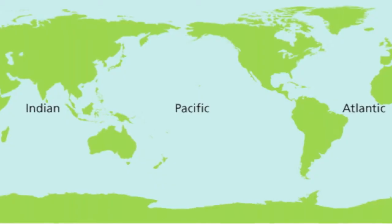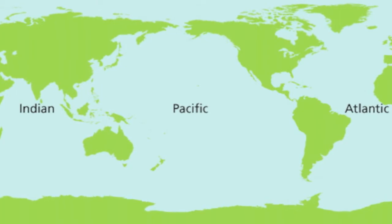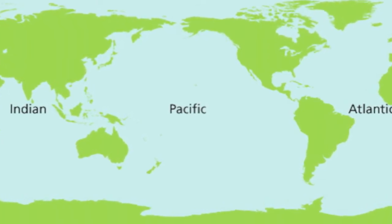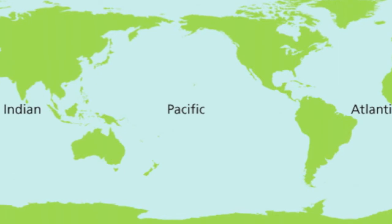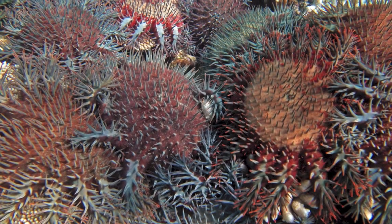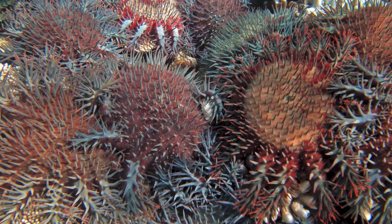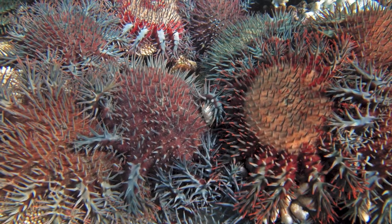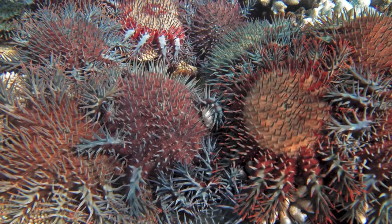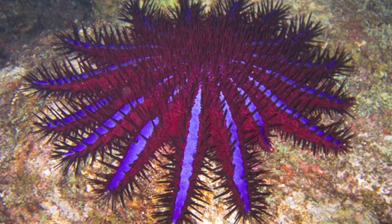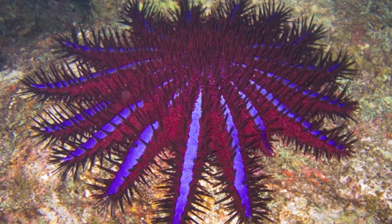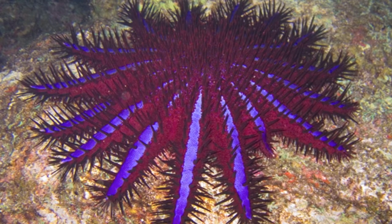The crown of thorns starfish is usually found in the Indo-Pacific region, the Indian Ocean, and the Western and Central Pacific Ocean. Crown of thorns starfish are such pests because they feed on coral and grow in staggering numbers, which makes it extremely difficult to get rid of them. A mother can release millions of eggs per breeding season. The crown of thorns starfish have a defense mechanism based on the spikes on their backs, which contain a poisoned gland.